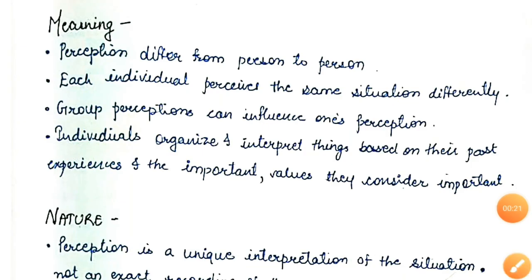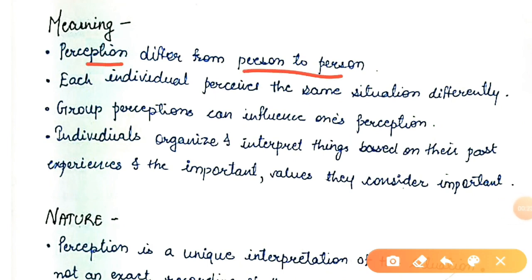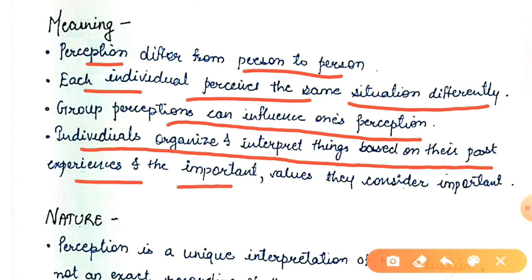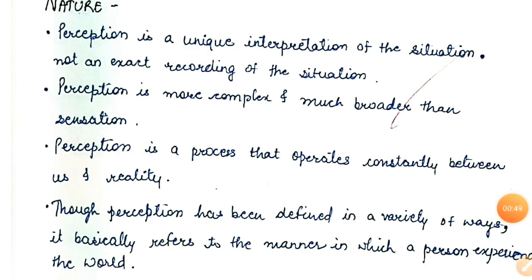The meaning of perception: perception differs from person to person, so for different persons perceptions are different. Each individual perceives the same situation differently. Group perceptions can influence one's perception. Individuals organize and interpret things based on their past experiences and the values they consider important — so perception can be based on moral values or past experiences.